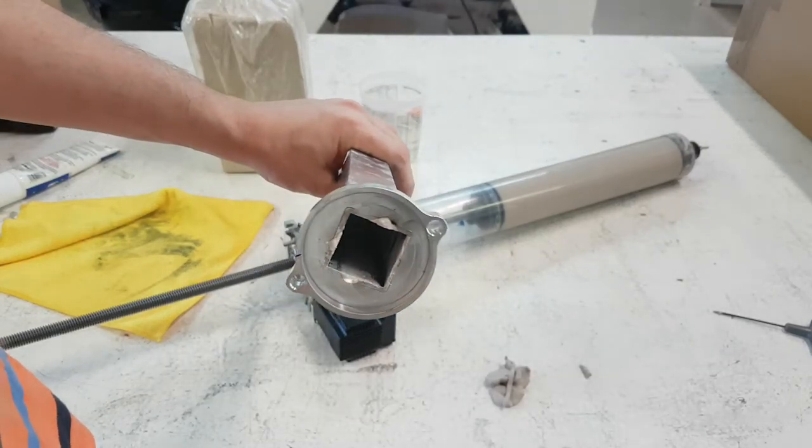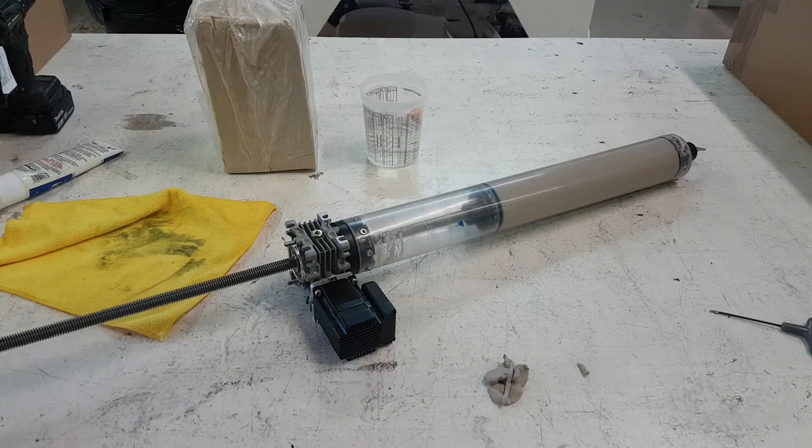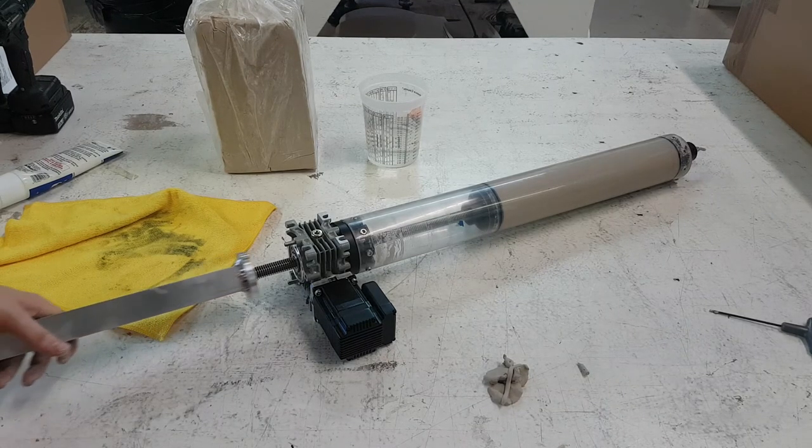There's grease on the walls of this tube. Those are all the things that can prevent our extruder system from working correctly.